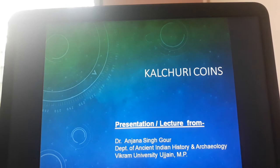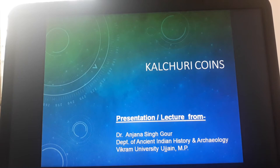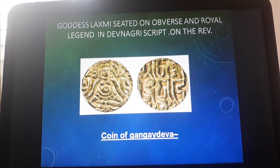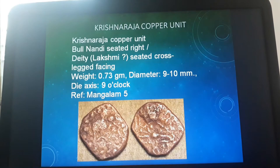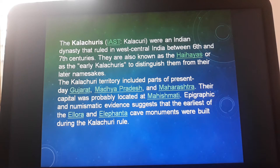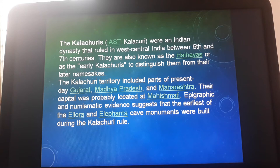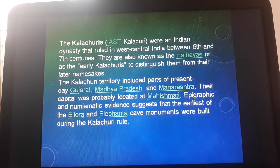Today we have to discuss the Kulchuri coins. As far as you know the political history about the Kulchuris — it is an Indian dynasty that ruled in the region of West Central India between the 6th and 7th century. The ancestors of this Kulchuri dynasty are known as the Hai Hai. The Kulchuri territory in the present day includes Gujarat, Madhya Pradesh, and Maharashtra, and the capital was probably located at Mahishmati.